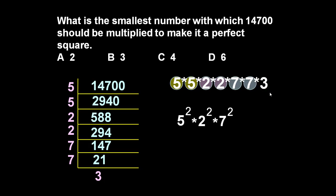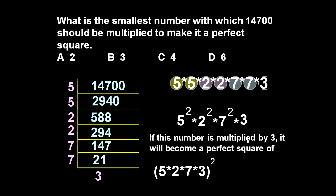So if we multiply this whole number with 3, means if this number is multiplied by 3, it will become a perfect square. It will become 3 squared.